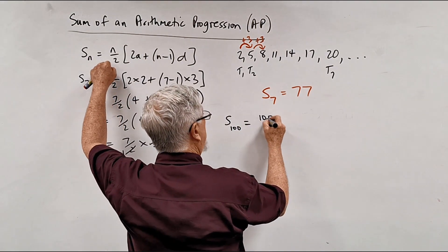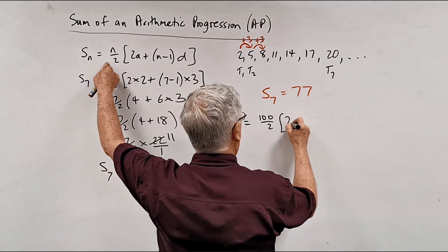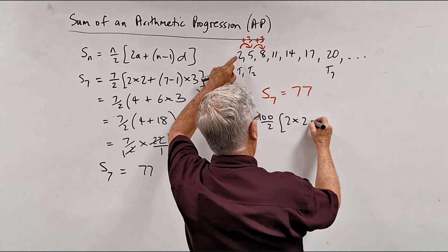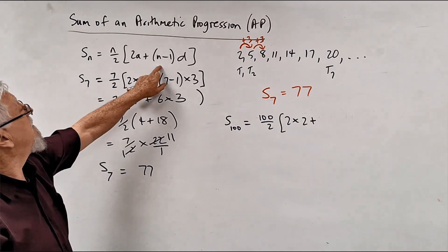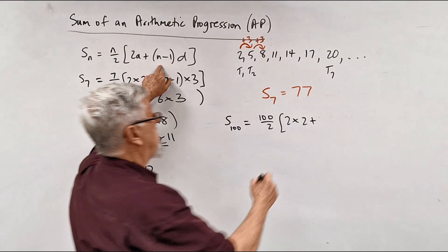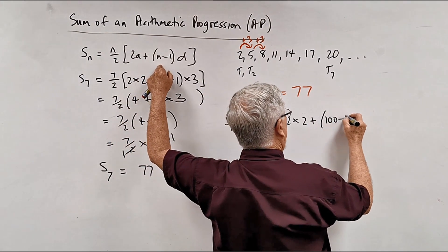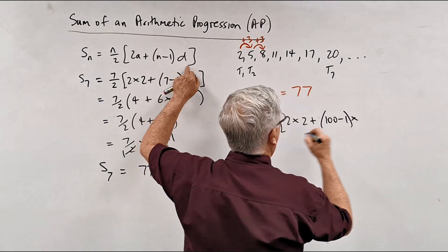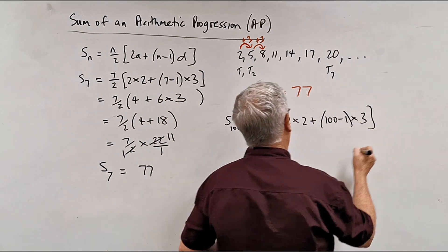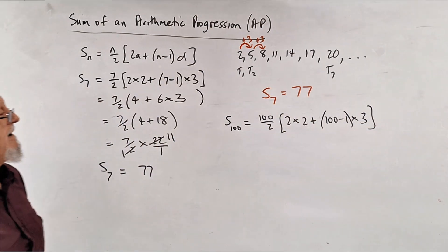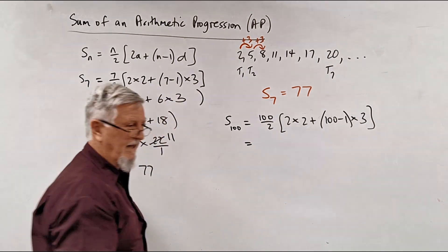Now where are we going to go? Go back to the formula. It's 100 on 2, outside of 2 times 2 plus, how many terms are we doing? So it's 100 take 1 times by D, which is 3. And hopefully, I've just made this up in my head. The numbers aren't too bad, but I could always stop and pick up a calculator.